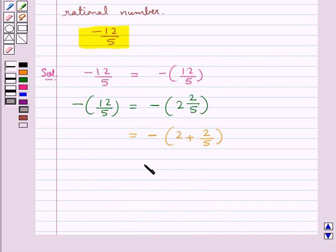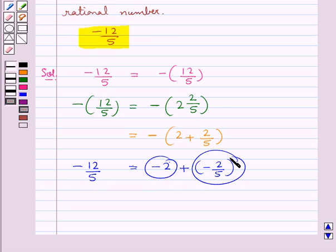Or you can say this is equal to minus 2 plus minus 2 upon 5. So minus 12 upon 5 is equal to minus 2 plus minus 2 upon 5, where this minus 2 is an integer and minus 2 upon 5 is a rational number.